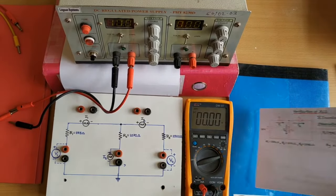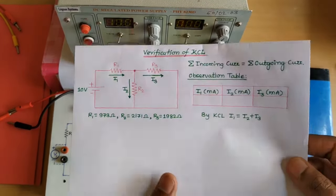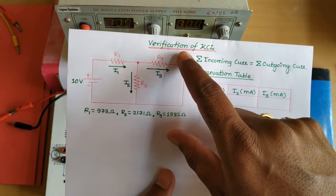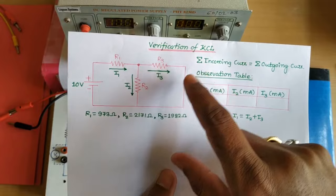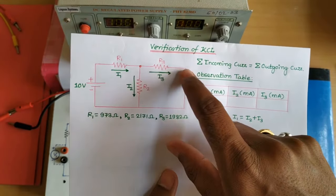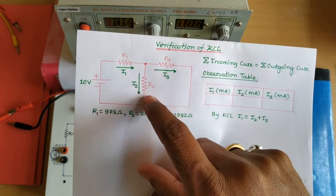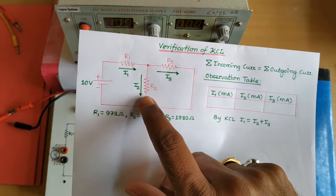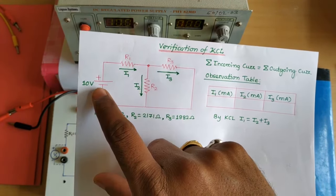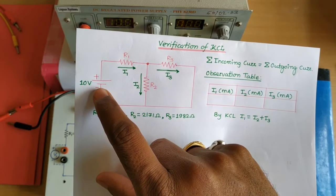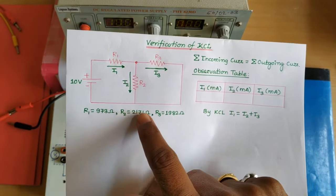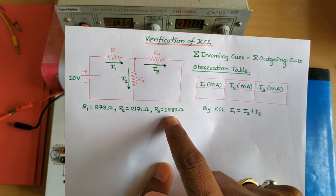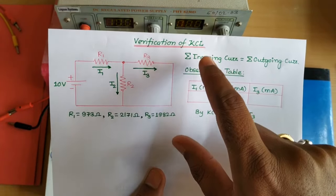Hello friends, welcome back. Today we are performing an experiment on KCL — KCL stands for Kirchhoff's Current Law. In this experiment we will verify KCL by using a T-type network. We have three resistances R1, R2, and R3, and the currents flowing through them are called I1, I2, and I3 respectively. From one side we are applying 10 volts as the supply voltage, and we have already measured the resistance values using an ohmmeter.